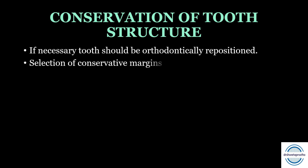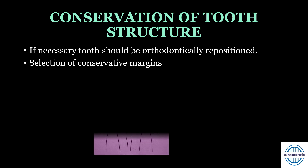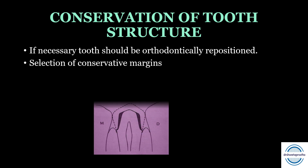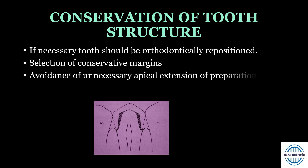Second, selection of conservative margins should be chosen, but it should be compatible with the principles of tooth reduction. Third, avoidance of unnecessary apical extension of the preparation — we should remain supragingival as much as possible.